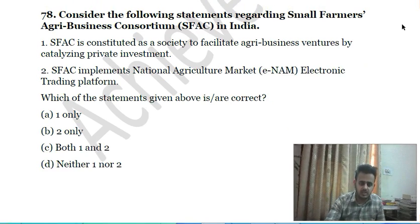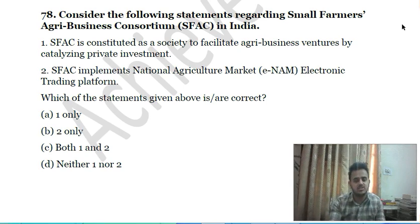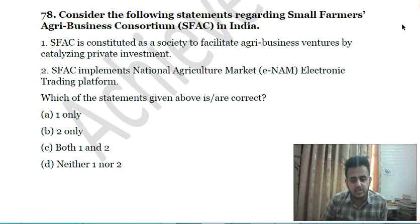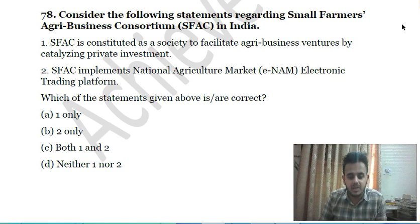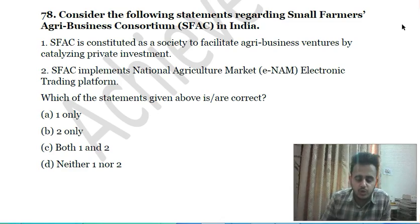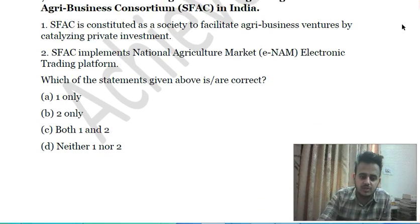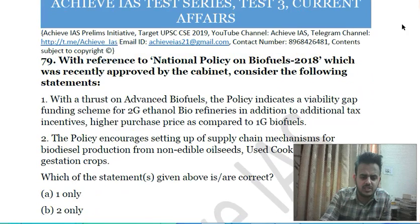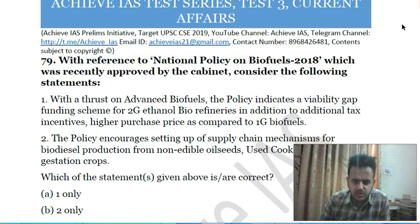Seventy-seventh question: consider the following statements about the Small Farmers Agri-Business Consortium (SFAC) in India — first, SFAC is constituted as a society to facilitate agri-business ventures by catalyzing private investment; second, it implements the National Agriculture Market (e-NAM) electronic trading platform. Choose the correct answer.